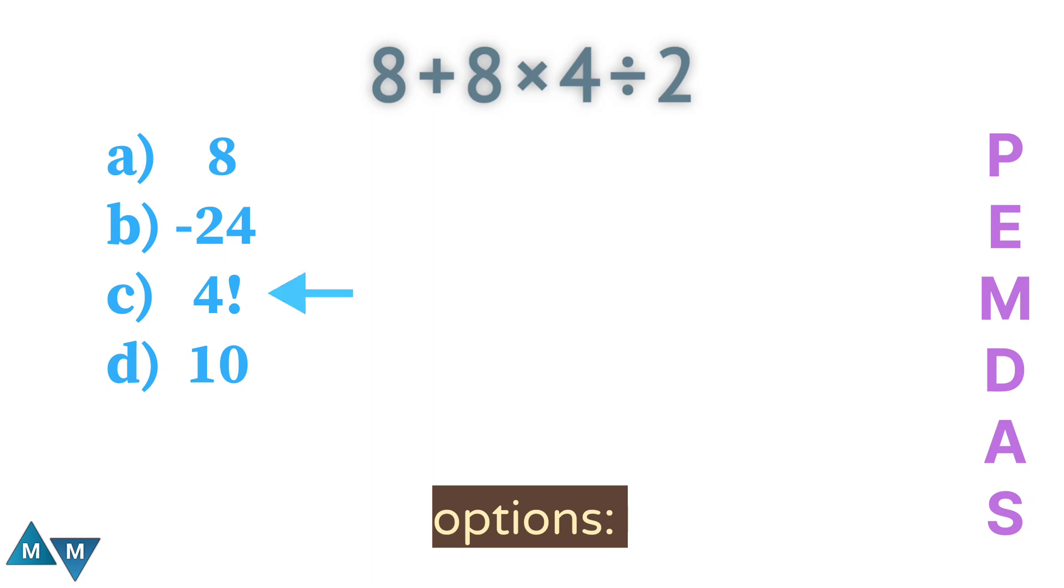The third one is 4 factorial. Look, when a number has this little exclamation mark in front of it, we call this number a factorial. How much is 4 factorial? You take a number and multiply its predecessors until 1 arrives. So 4 factorial equals 4 times 3 times 2 times 1.